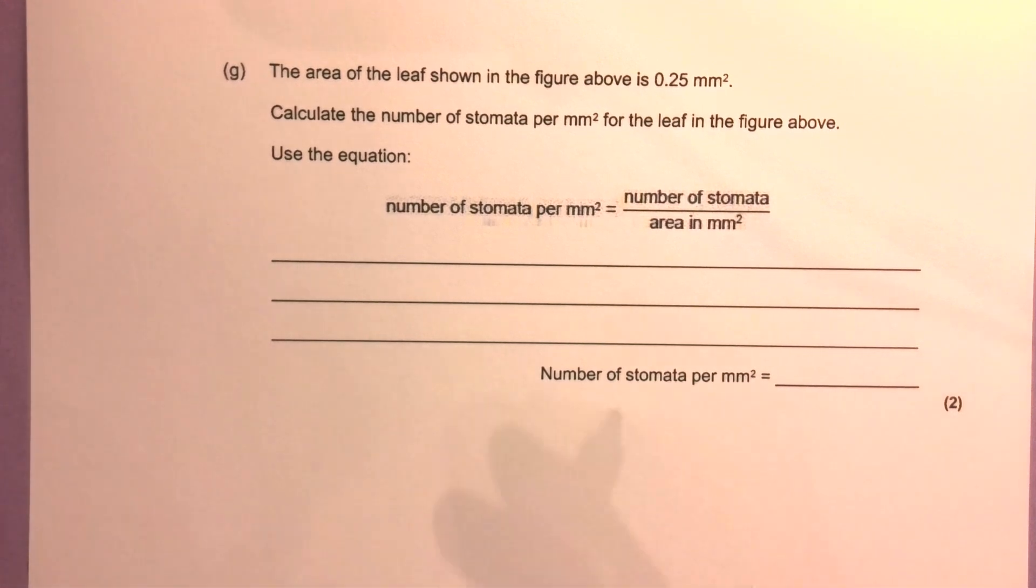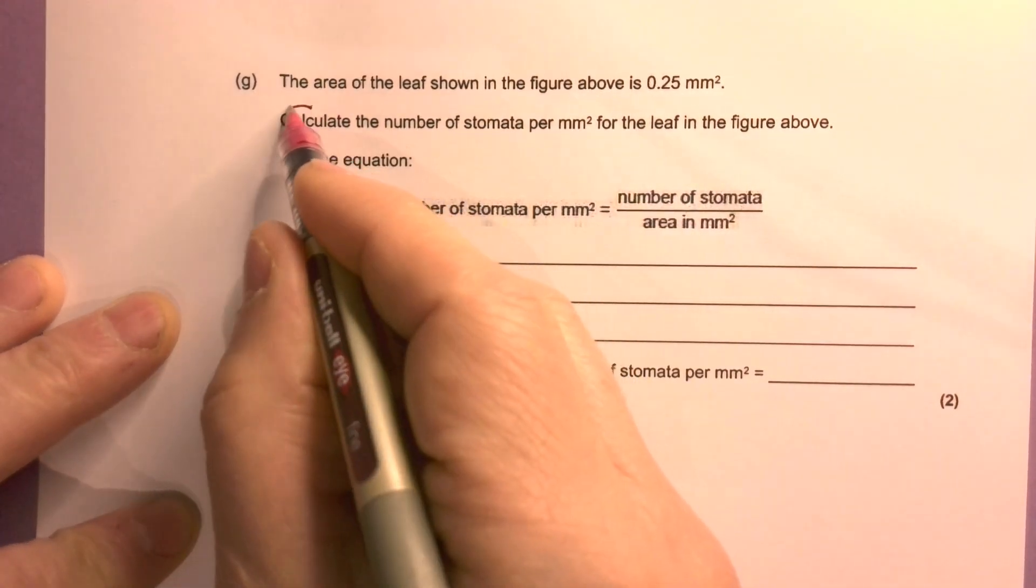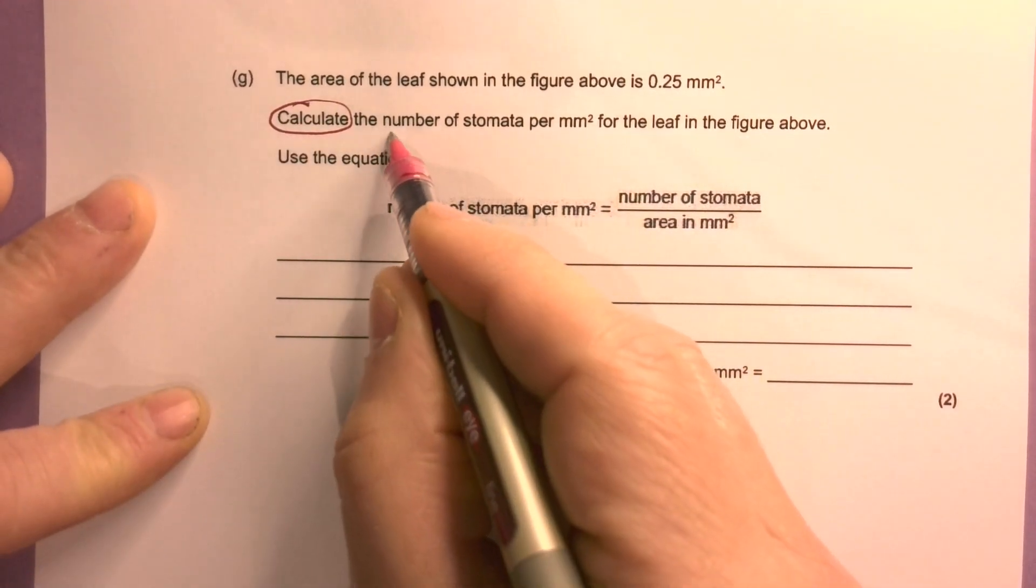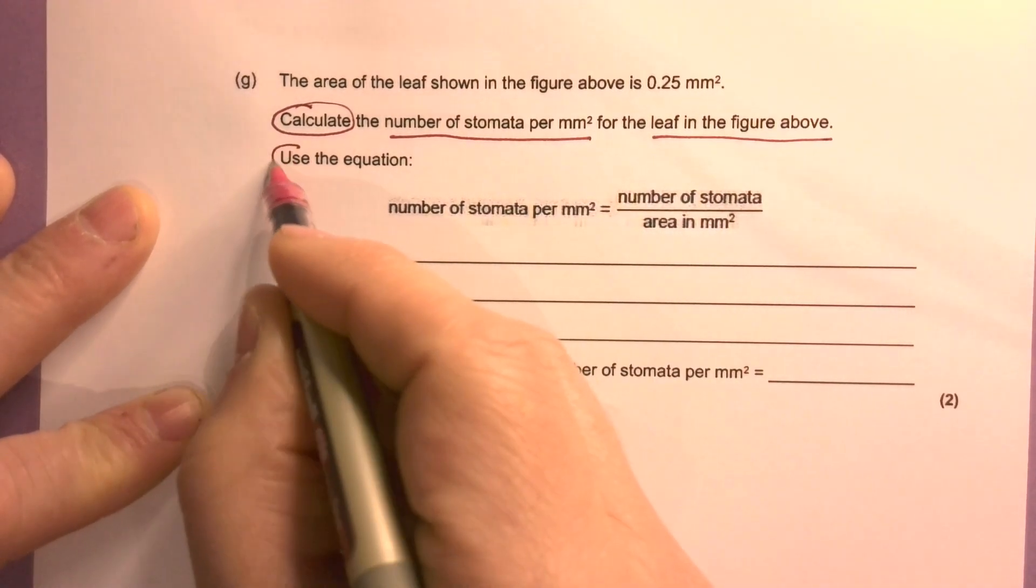Part G: The area of the leaf shown in the figure above is 0.25mm squared. Calculate the number of stomata per millimetre squared for the leaf in the figure above. Use the equation.